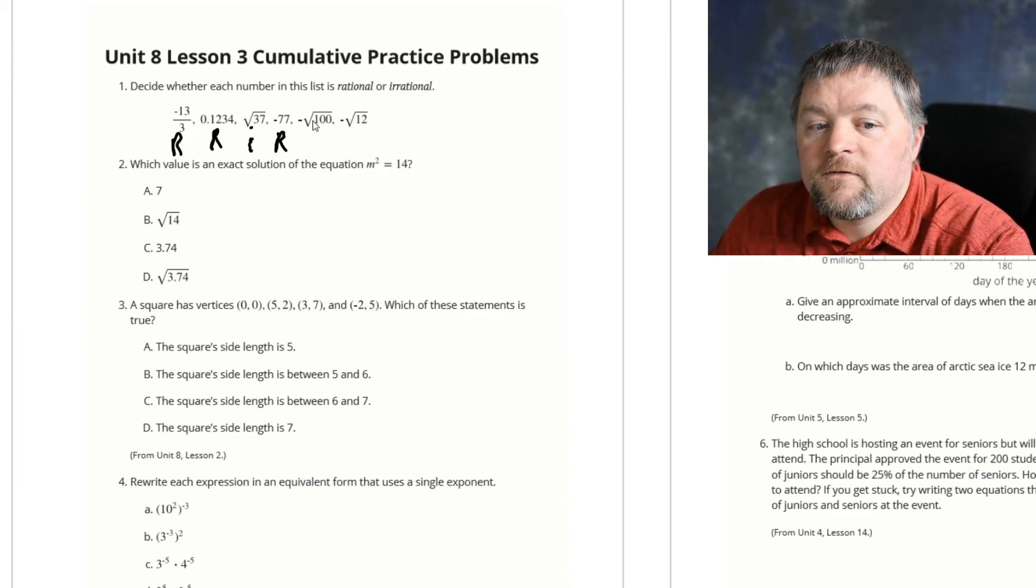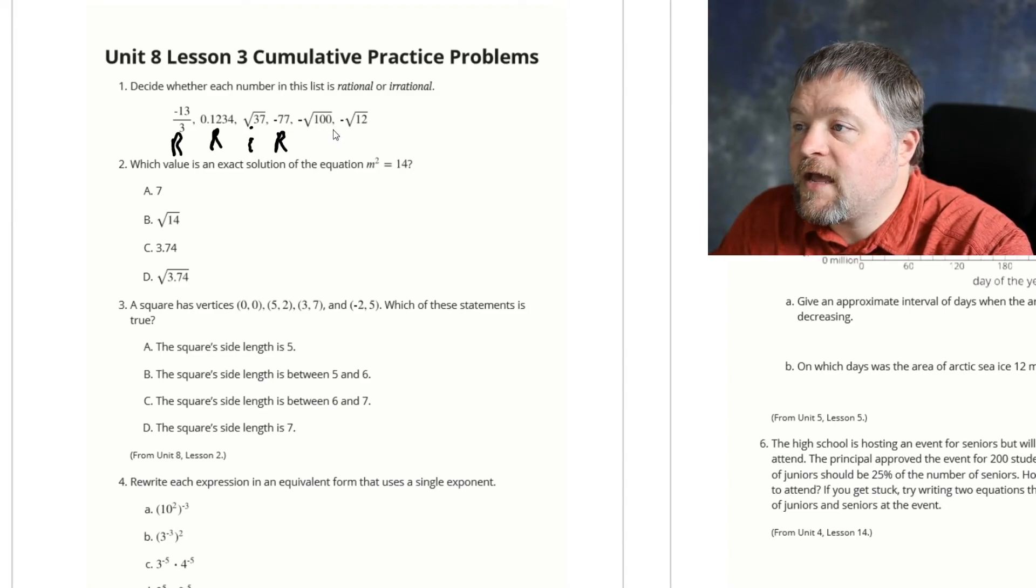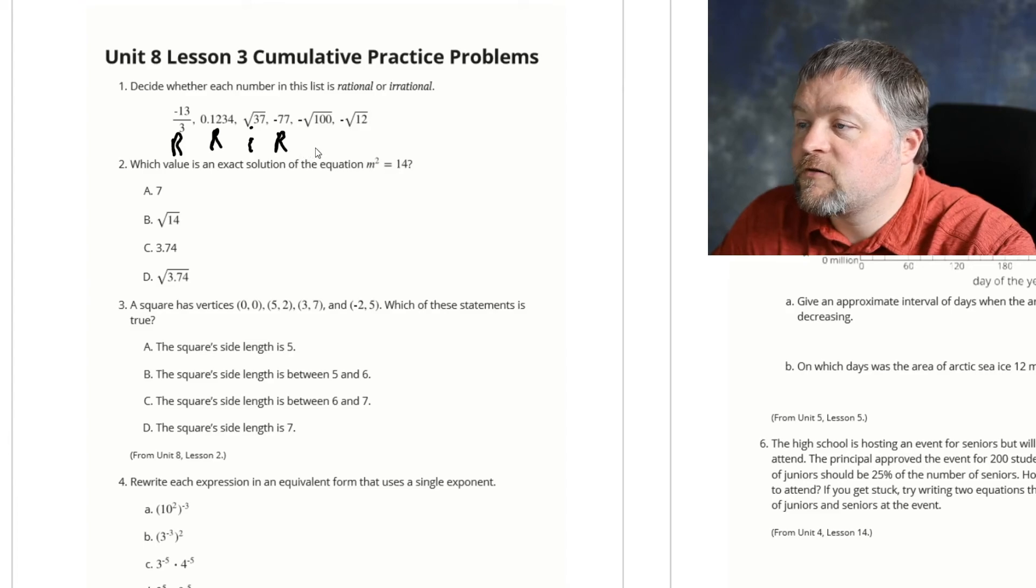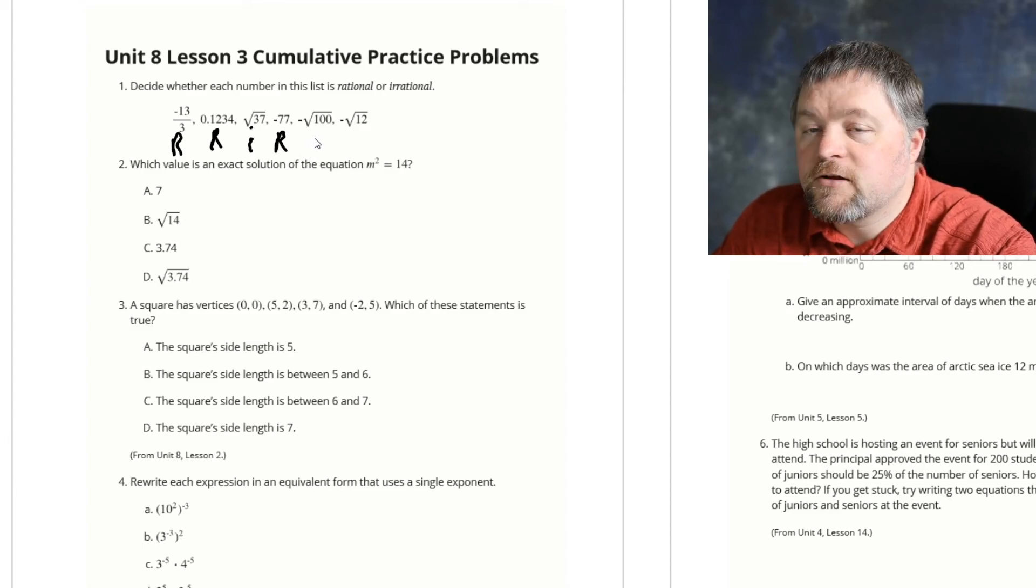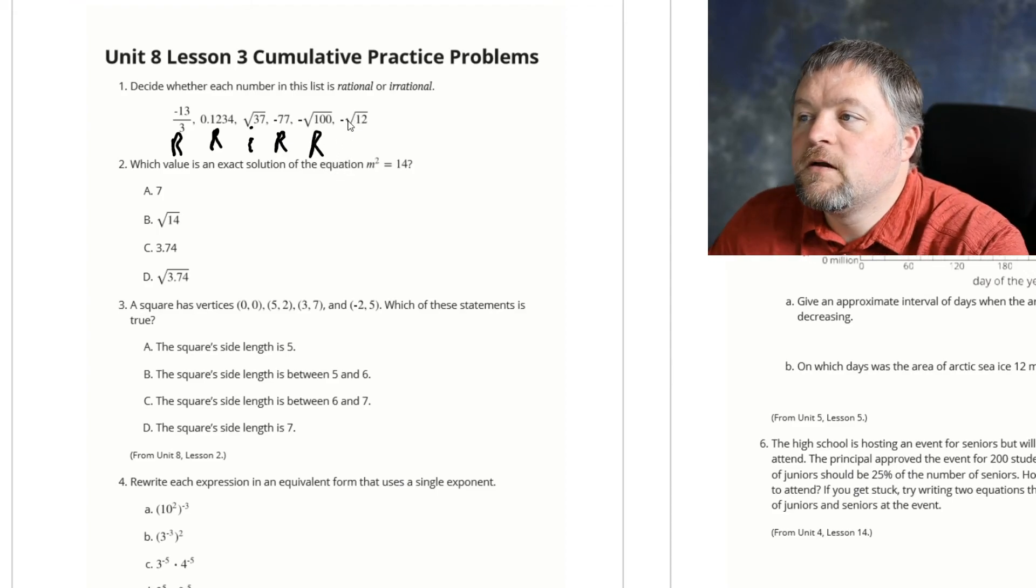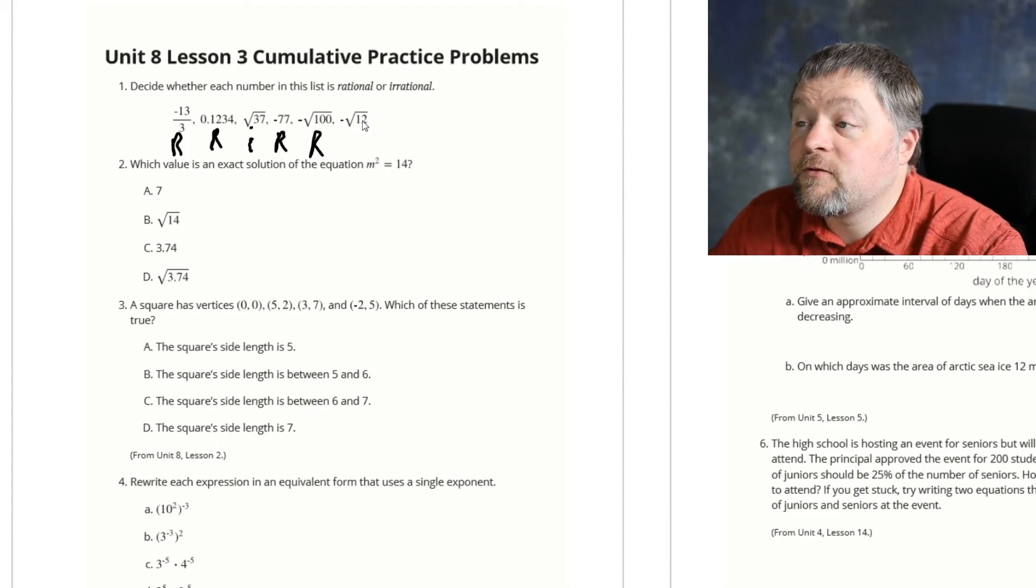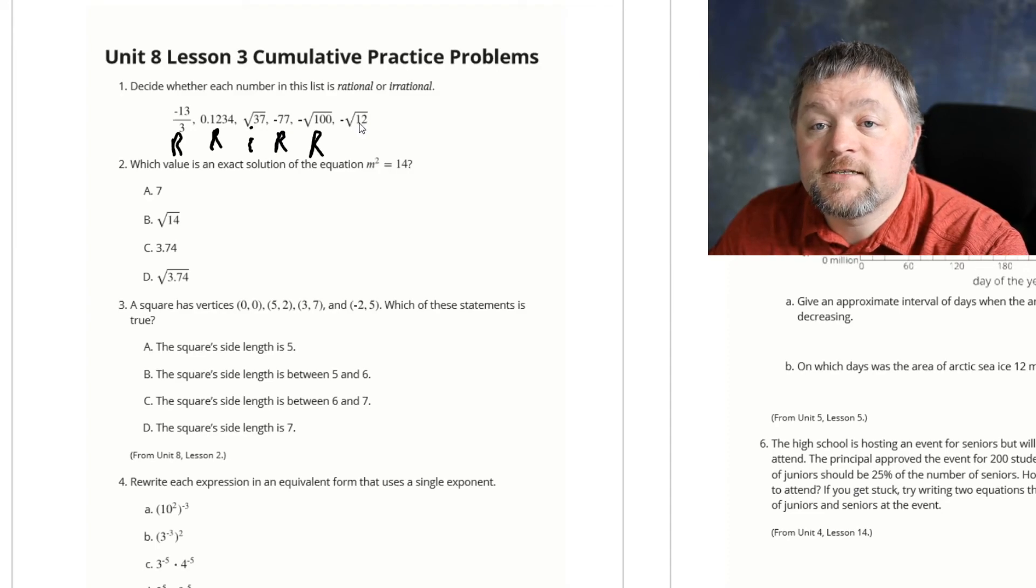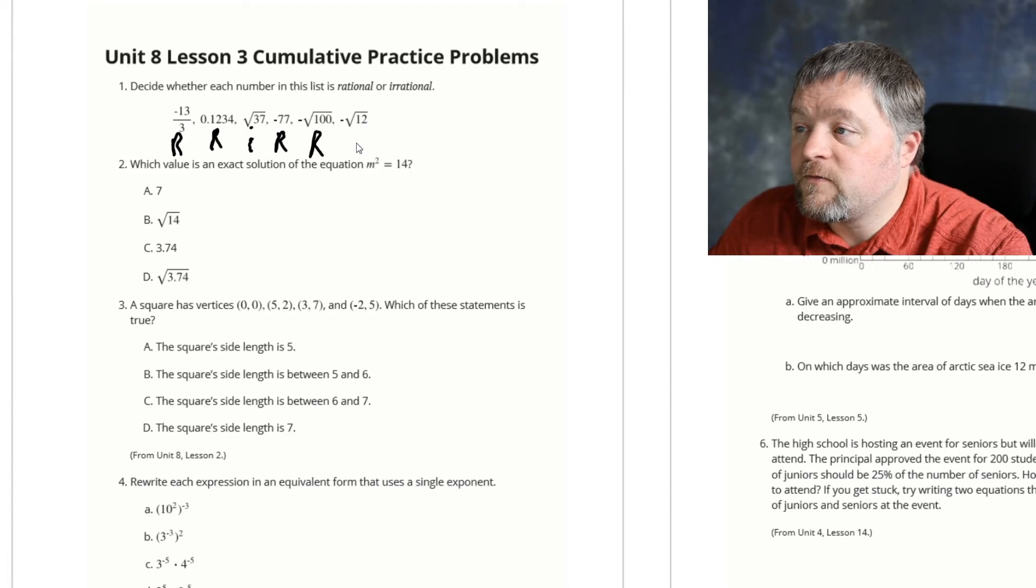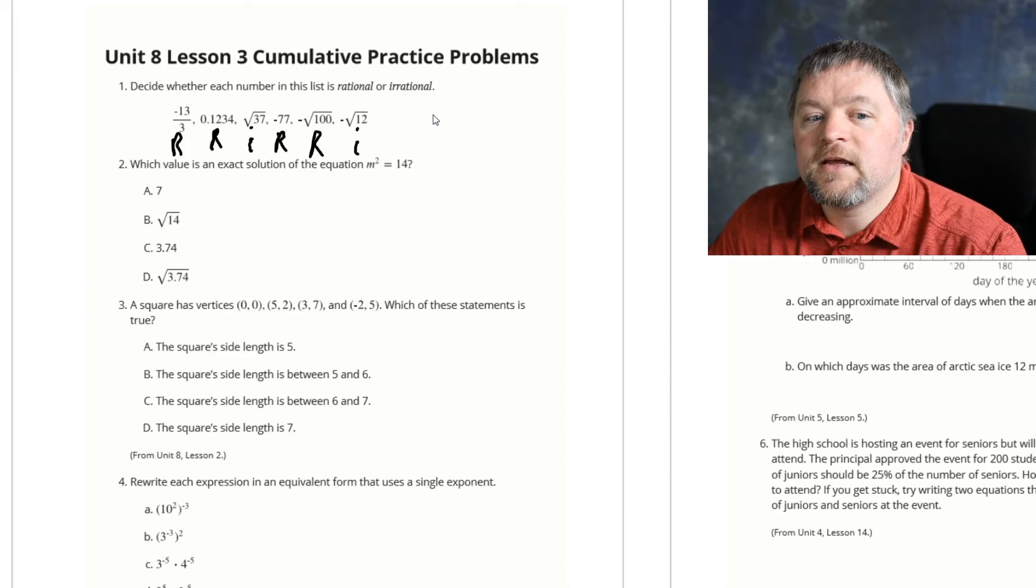The negative square root of 100. The square root of 100 is 10. The negative square root of 100 is negative 10. That could be negative 10 over 1, that would be a fraction. The negative square root of 12. Well, the square root of 9 is 3, and the square root of 16 is 4. The square root of 12 is not going to come out as a nice whole number. So that one has to be irrational.